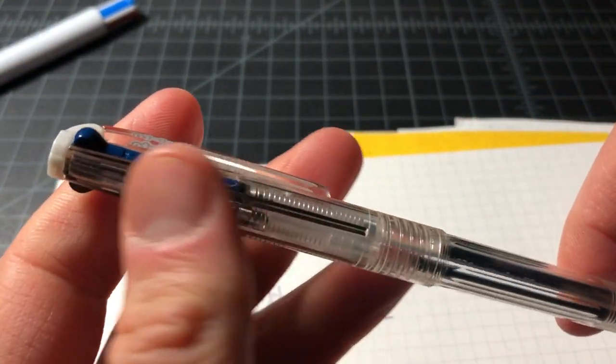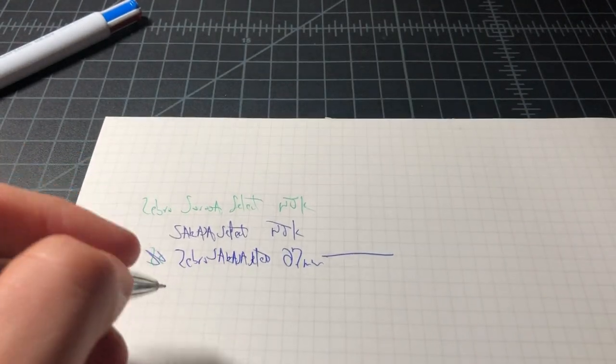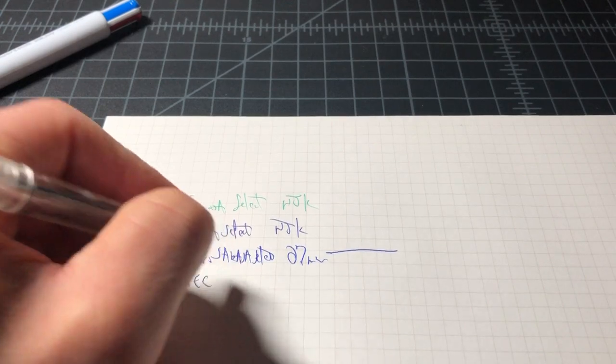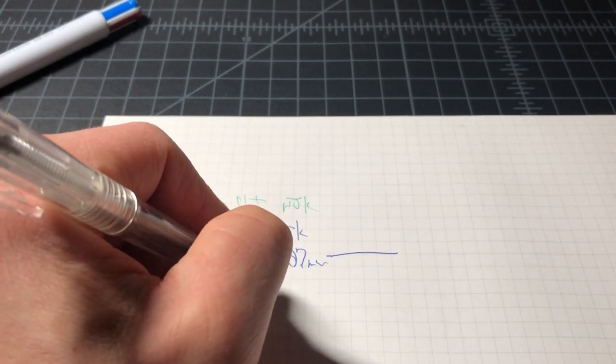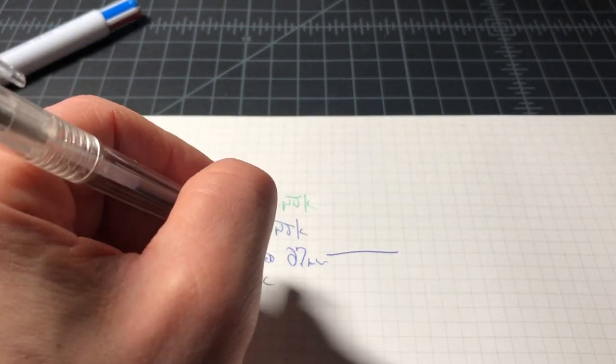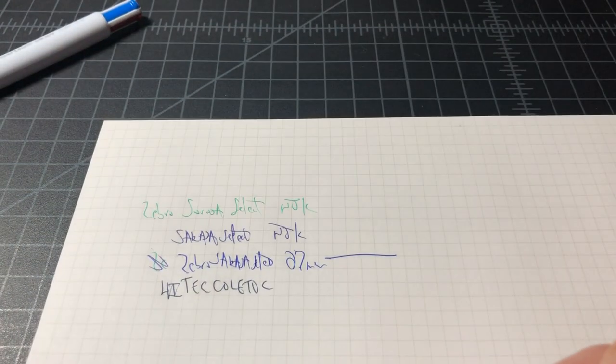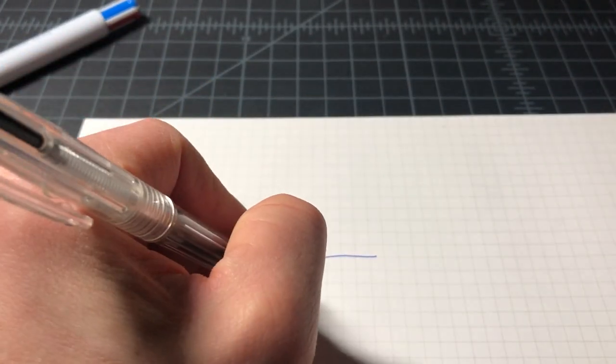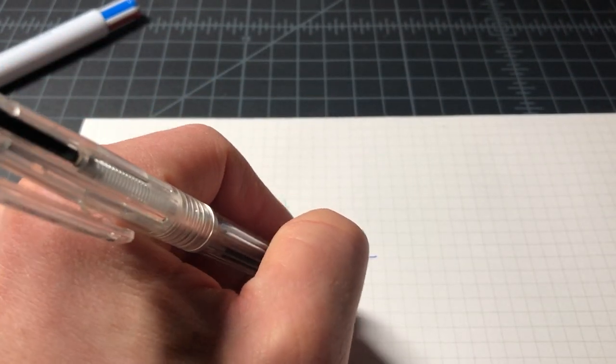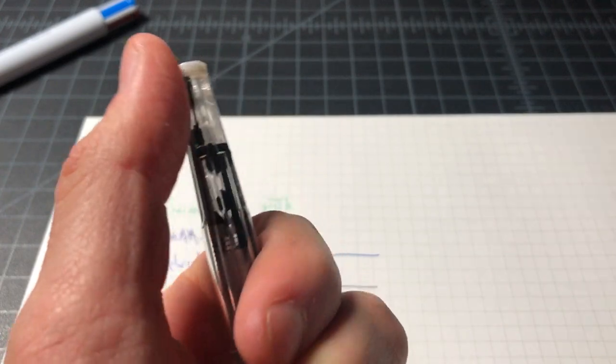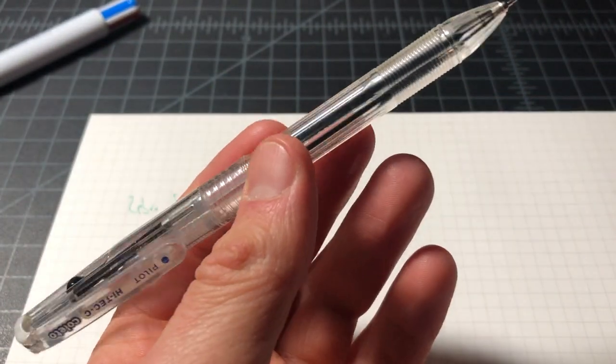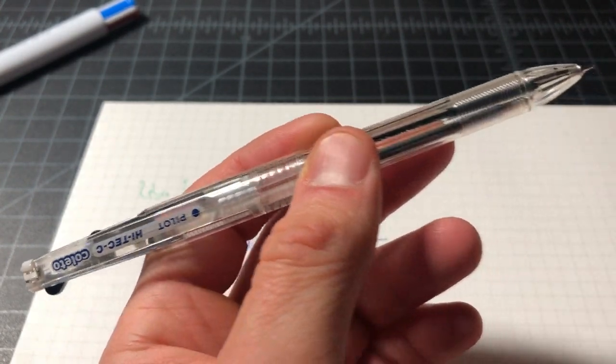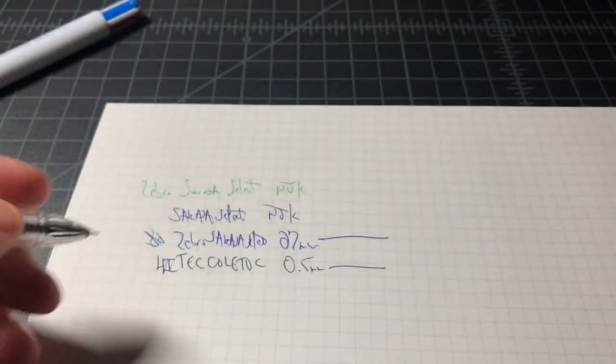Moving over to the Hi-Tec-C Coleto, and this one is 0.5 millimeter. I really like how these Coletos write, specifically in the, I really like how the Hi-Tec writes specifically in the Coleto refill. Just a great, great option.